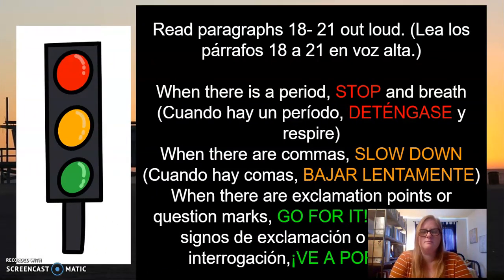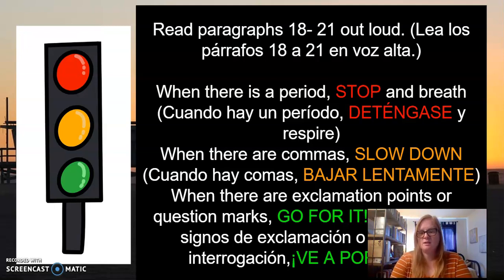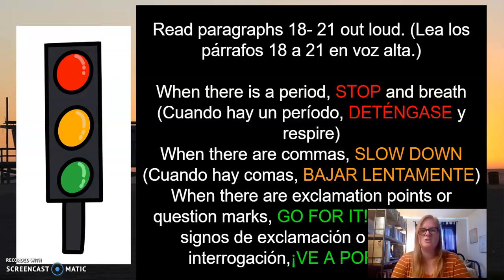Here is your practice: read paragraphs 18 through 21 out loud. When there is a period, stop and breathe. When there are commas, slow down. When there are exclamation points or question marks, go for it. For a question mark, listen to the difference: 'Have you ever heard of St. Augustine?' — the way I say it lets you know it's a question. Even at the end of 'St. Augustine' you can hear a little question lift. You have to add in those different tones, which makes it more fun to read and also helps you understand what the author wants you to feel about these places.